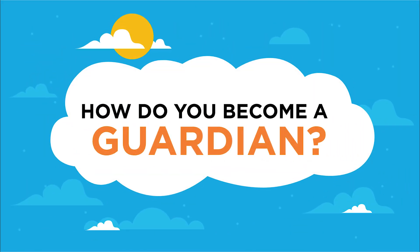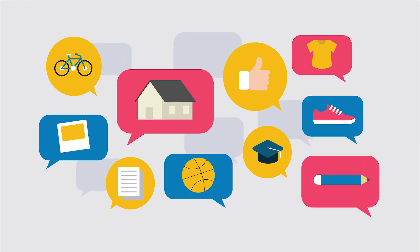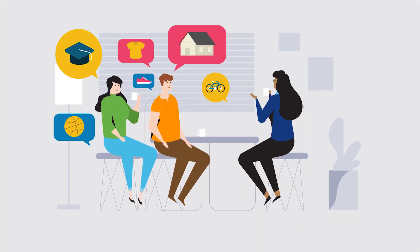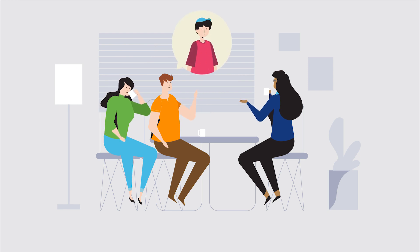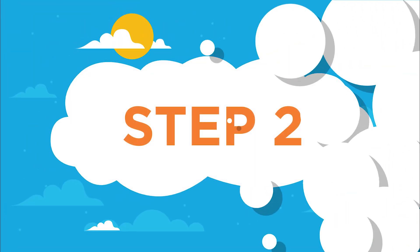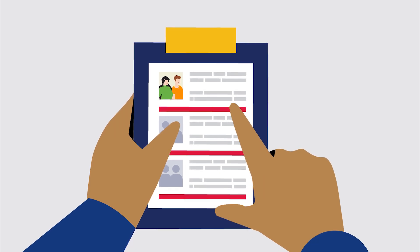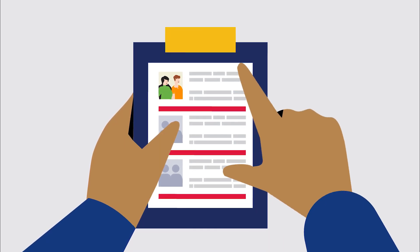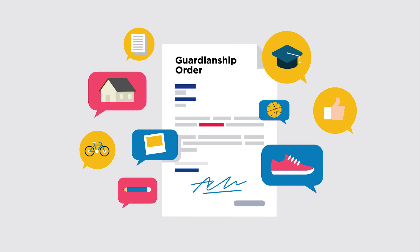How do you become a guardian? Step 1: Talk to your caseworker to see if guardianship may be the right option for the child in your care. Step 2: If guardianship is likely to be in the child's best interest, you'll meet with a caseworker to discuss what's involved in becoming a guardian.